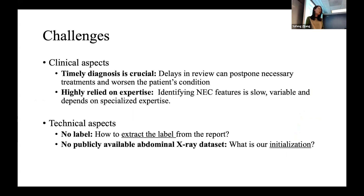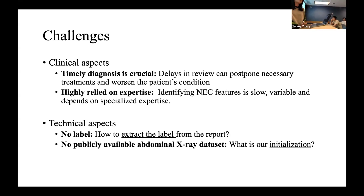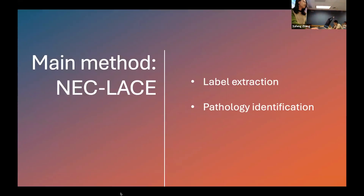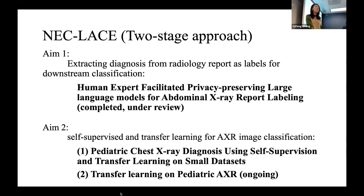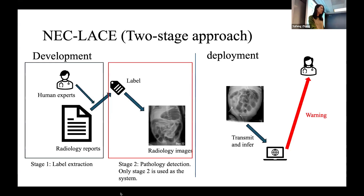From the technical aspect: we don't have labels — they are implicitly stated in the impression section of the radiology report. Another technical challenge is that there's no publicly available abdominal X-ray dataset. We only have 15,000 pairs, whereas chest X-ray datasets have millions of public samples, giving chest X-ray models a good initialization we don't currently have.